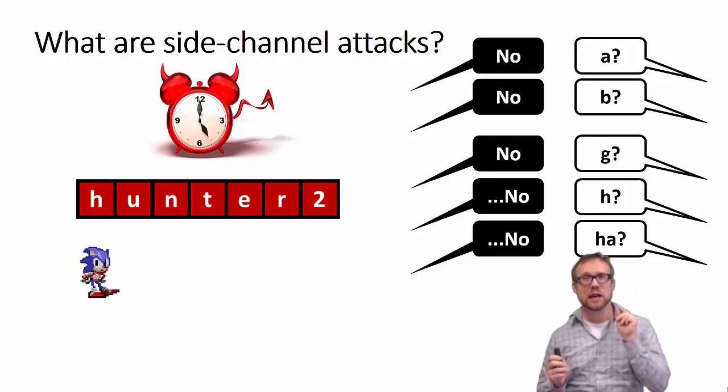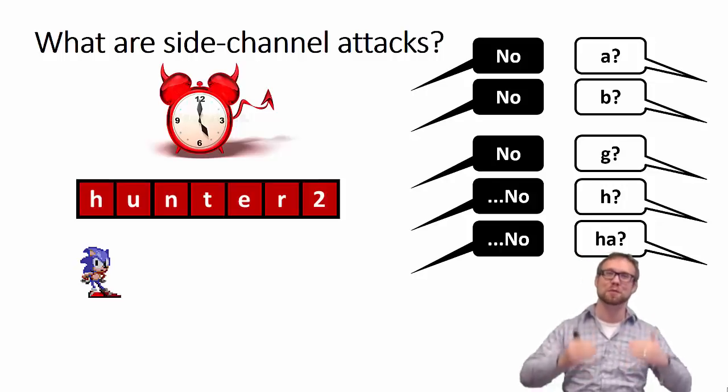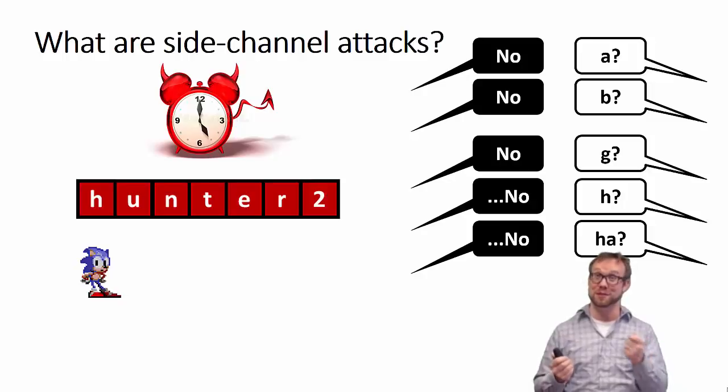The side channel here is the timing information. It's something about the physical implementation of the algorithm, this password-checking algorithm, that you are exploiting. In this case, the timing differences. So, let's keep that also as an ingredient.